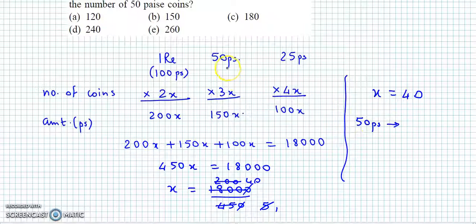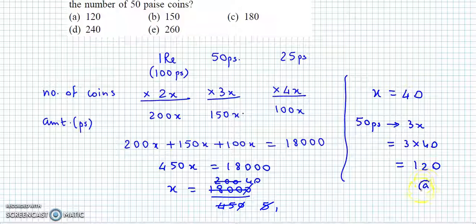paise ke 3x coins hai. 3x, so that will be 3 into 40, so the answer is 120. To correct option hai option A.